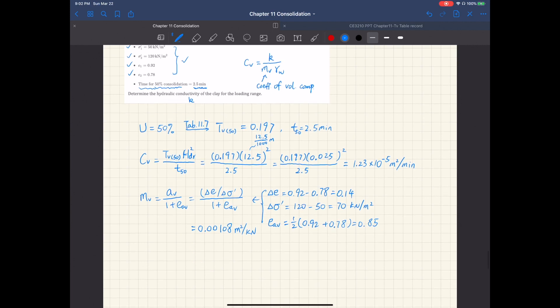And finally, the hydraulic conductivity that we're looking for, k, is cv times mv times gamma water. So this is 1.23 times 10 to negative 5, times 0.00108, and then the unit weight of water is 9.81. So the hydraulic conductivity is 1.303 times 10 to negative 7 meters per minute.